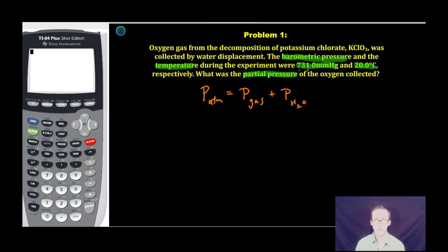Now, we're told in the problem that the barometric pressure or the pressure of the atmosphere measured by a barometer is 731.0 millimeters mercury. So don't be confused by that barometric or measured by a barometer. It's just talking about the device that measures the pressure of the atmosphere.